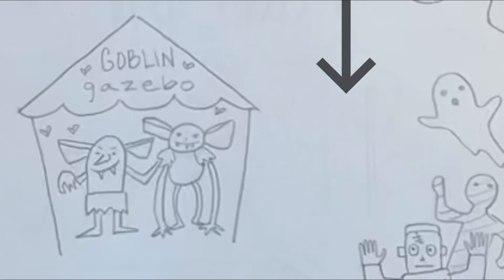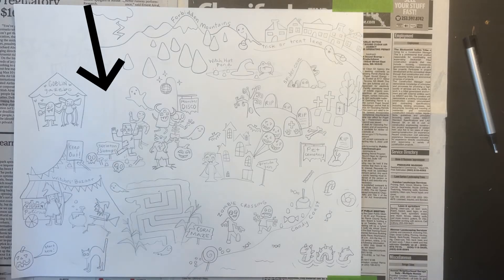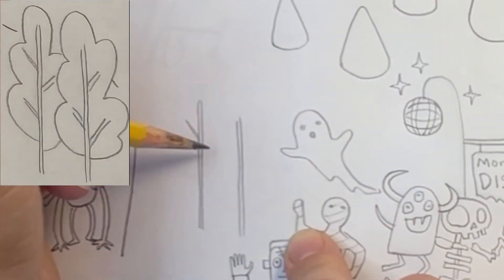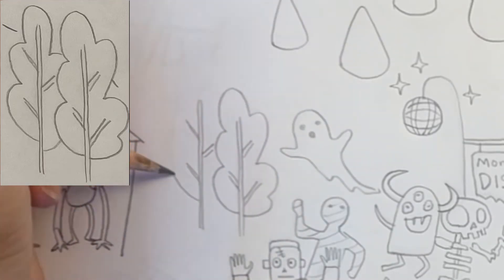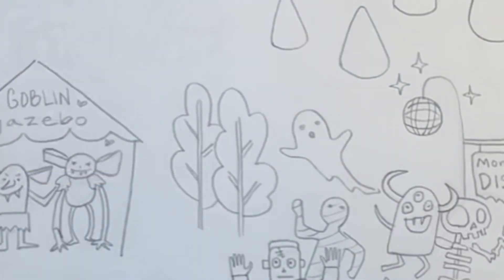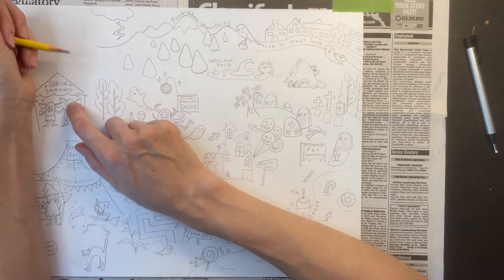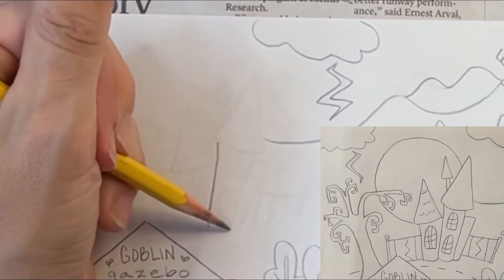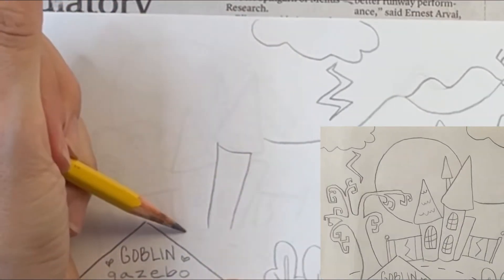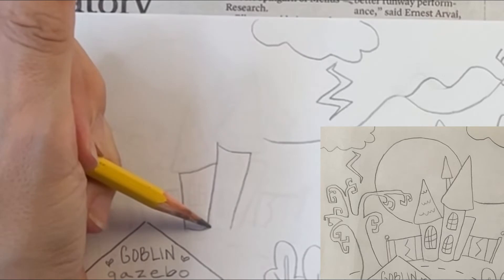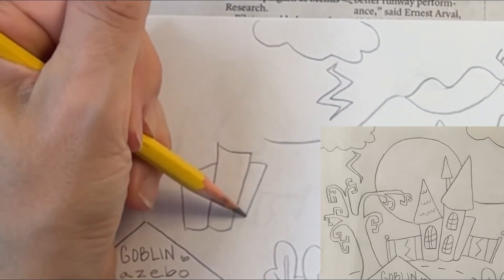There's a little space between my gazebo and my monster disco, so I'm going to add a couple of trees here. Right above the Goblin Gazebo, I'm adding a dark, ominous Cobweb Castle. I'm drawing a few rectangles squished together, then adding triangle shaped rooftop spires and drawing a few windows.